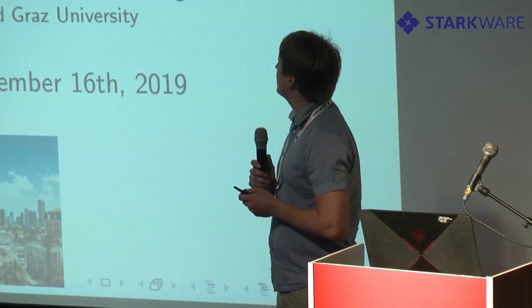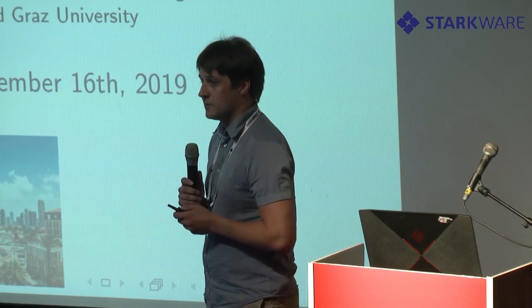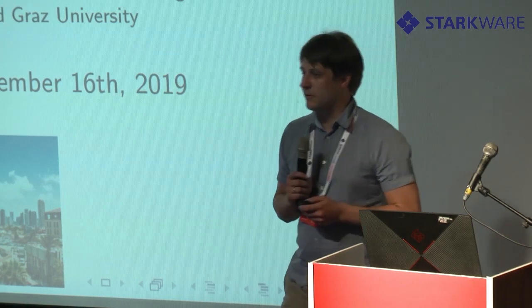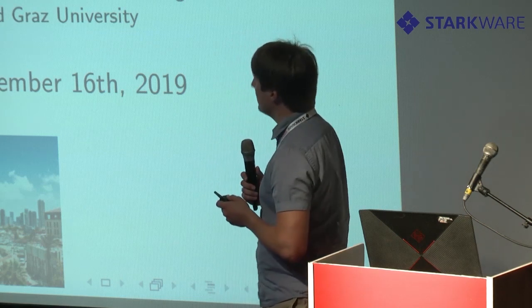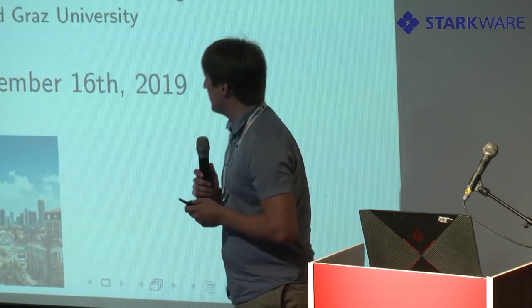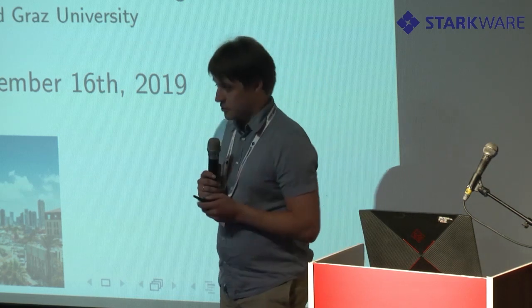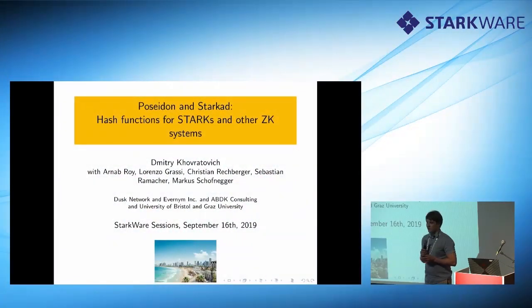I'm going to present here two designs, but they are also close to each other. These are hash functions for Starks, but not only for Starks. If you have some other zero-knowledge proof construction, something even better than Stark, you can use them as well. What's interesting about Poseidon and Starkad - fortunately, Simon also made a great introduction into the need of large fields, inversions, and other elements that we're going to use, so I will skip some more technical parts.